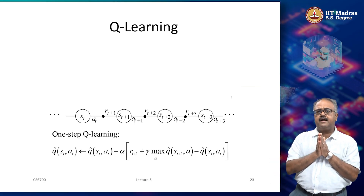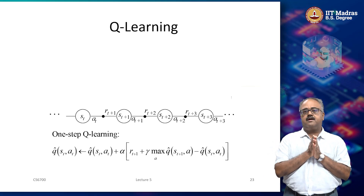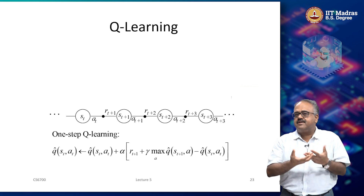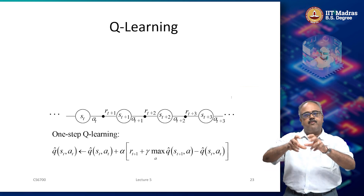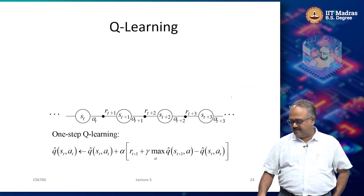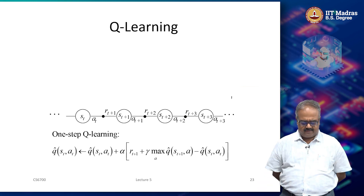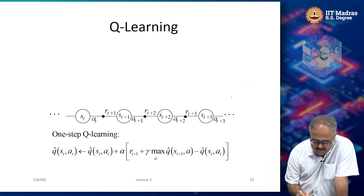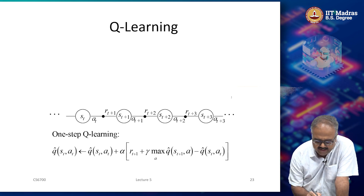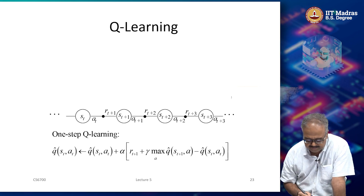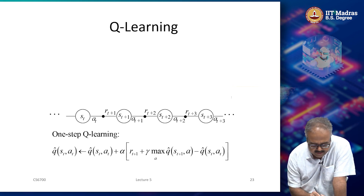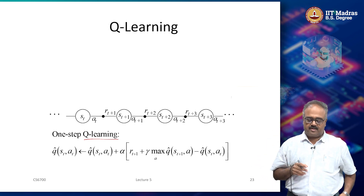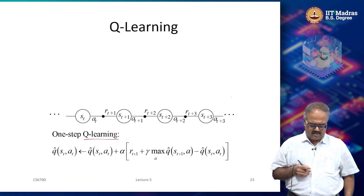Now we will look at a very popular reinforcement learning algorithm, very similar to SARSA. It is a version of generalized policy iteration, but I will motivate it slightly differently. Our samples are coming from trajectories: S_t, A_t, R_{t+1}, S_{t+1} and so forth. The Q-learning update is sometimes called one-step Q-learning, and we can also think of multi-step Q-learning, similar to TD(0).